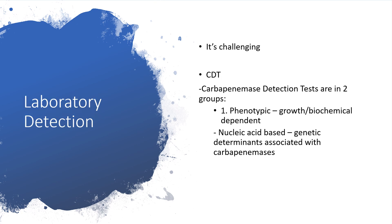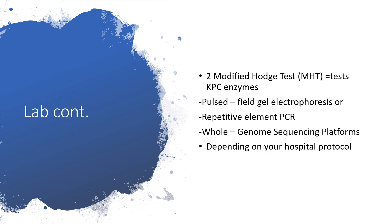Laboratory detection of carbapenemase-producing organisms is very challenging. Carbapenemase detection tests are in two groups: one is phenotypic — chemical-dependent, using nucleic acid-based genetic determinants; the second involves methods such as pulsed-field gel electrophoresis, repetitive element polymerase chain reaction, or whole-genome sequencing platforms, depending on your hospital protocol.